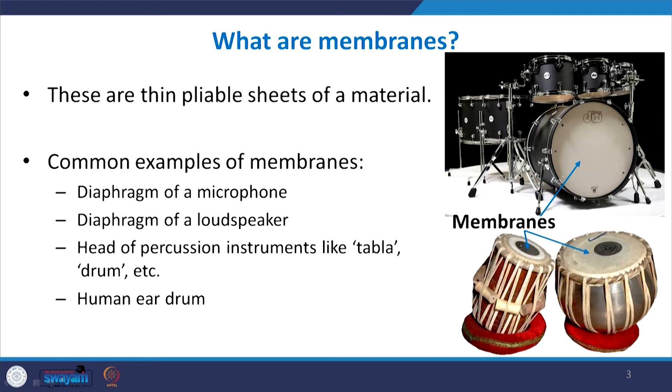Membranes are thin pliable sheets of materials. Some of the best examples are percussion instruments like a tabla or a drum. The top of a tabla or drum is hit and starts to vibrate, creating sound. All of these are examples of membranes — thin pliable sheets of material. Even the human eardrum is a membrane. Unlike a rigid body, where the whole body moves as a whole when excited, the vibration does not depend on the location of a particular member inside the body.